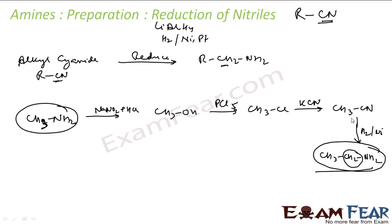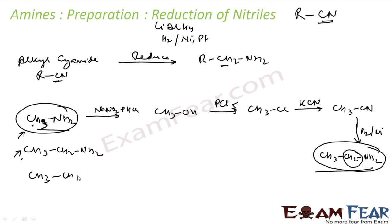Now CH3CN can be reduced using hydrogen with a nickel catalyst or LiAlH4 to get CH3CH2NH2. So I started with CH3NH2 and made CH3CH2NH2 — one CH2 is added extra. This reaction is very important because it is used for ascent of the amine series. The same process applies: convert to alcohol, then chlorine, then CN, then reduce to get CH2NH2.